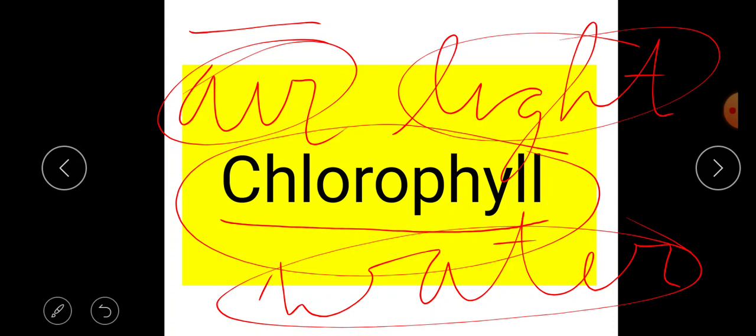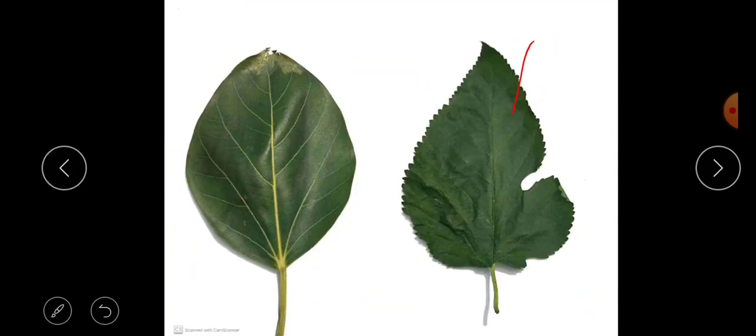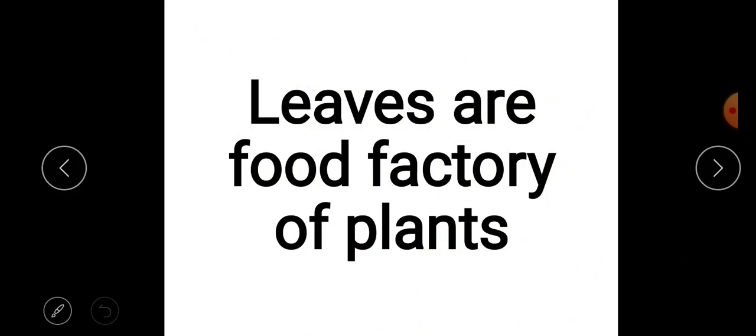In the presence of air, light, and water, chlorophyll helps the plant prepare its own food. We will discuss how plants prepare food in the next topic. We can say that leaves are the food factory of the plant, because leaves prepare the food.